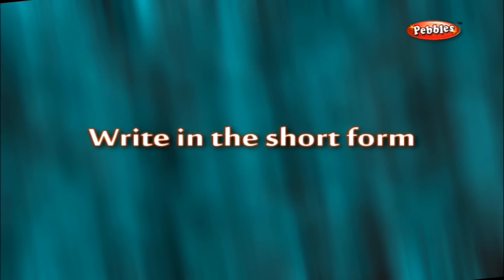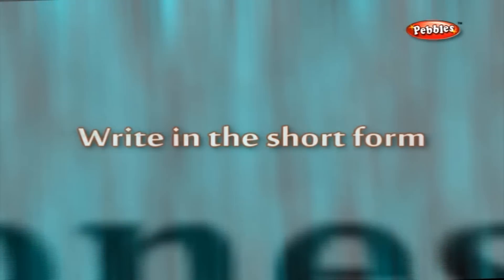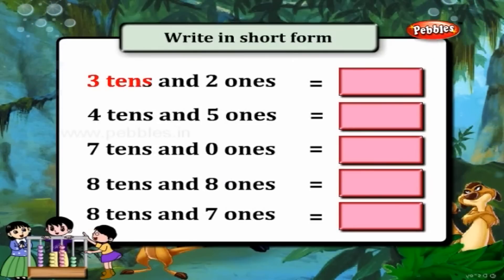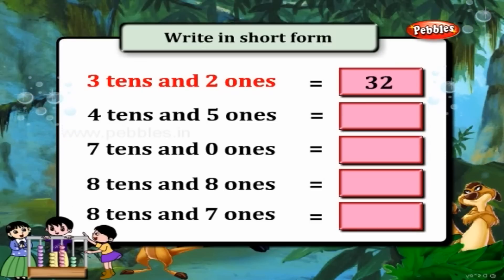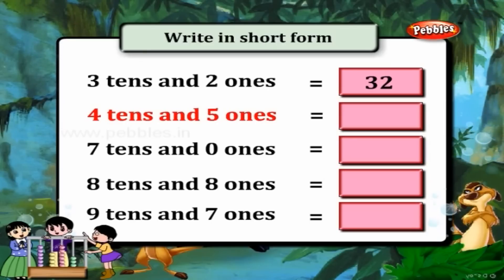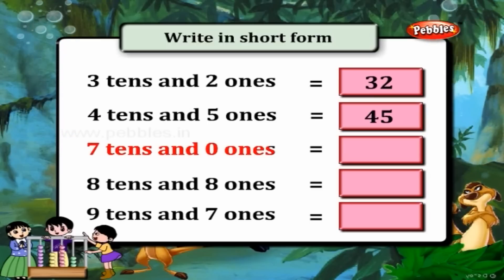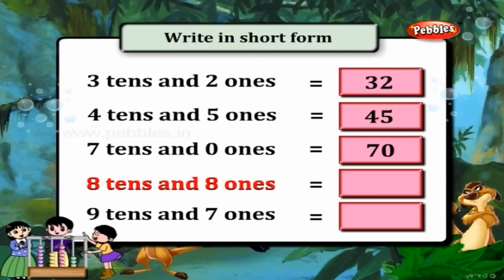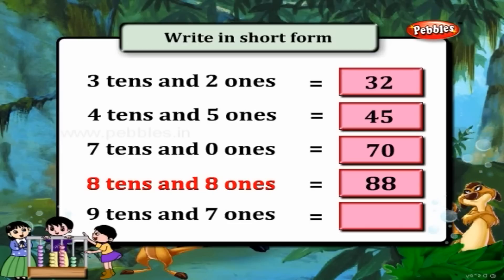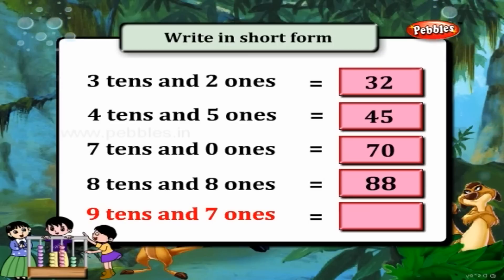Write in the short form. 3 tens and 2 ones gives us 32. 4 tens and 5 ones make 45. 7 tens and 0 ones is 70. 8 tens and 8 ones is 88. 9 tens and 7 ones — yes, it is 97.